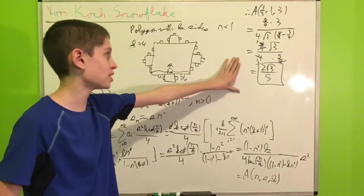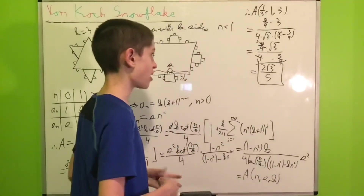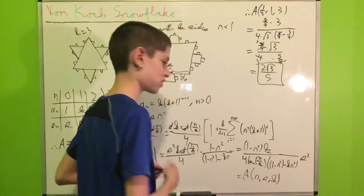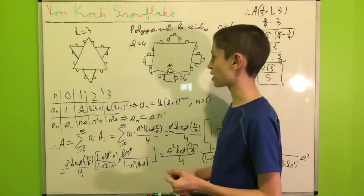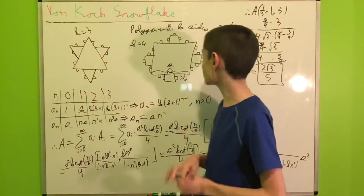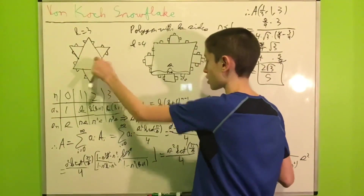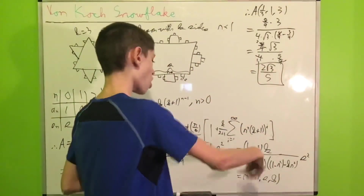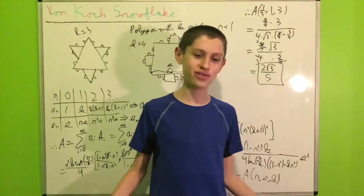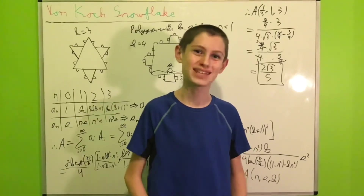I leave it as an exercise to compute not just the area but also the ratio of the total fractal area to the original polygon area for various values of r, s, and k. For the original Von Koch snowflake, the ratio should come out to 8/5. Merry Christmas Eve, and of course, Merry Christmas!